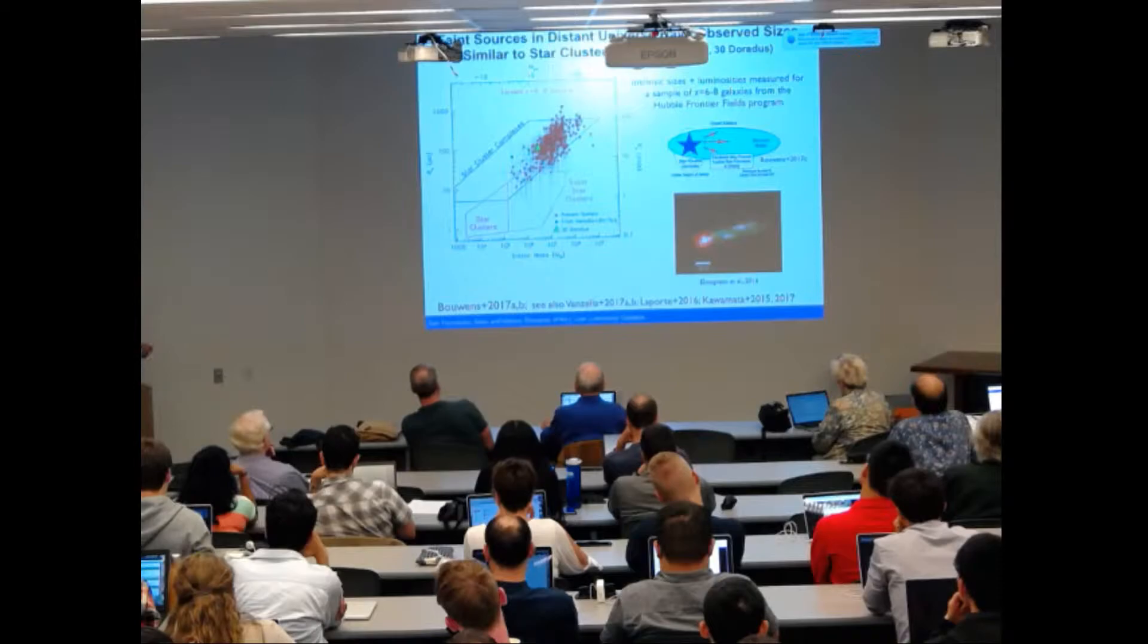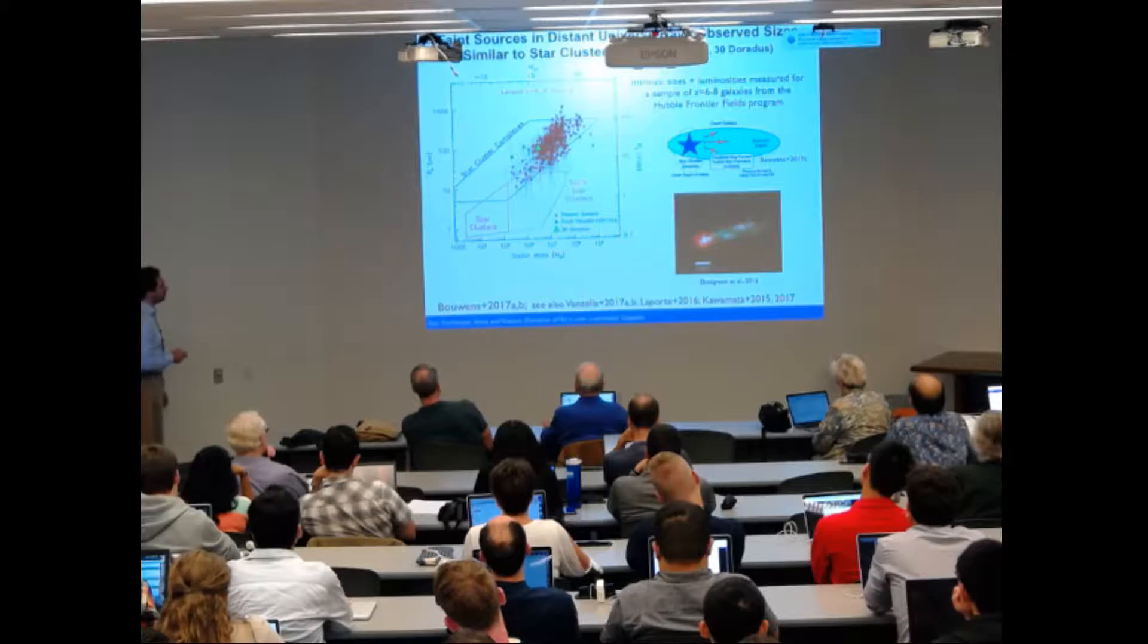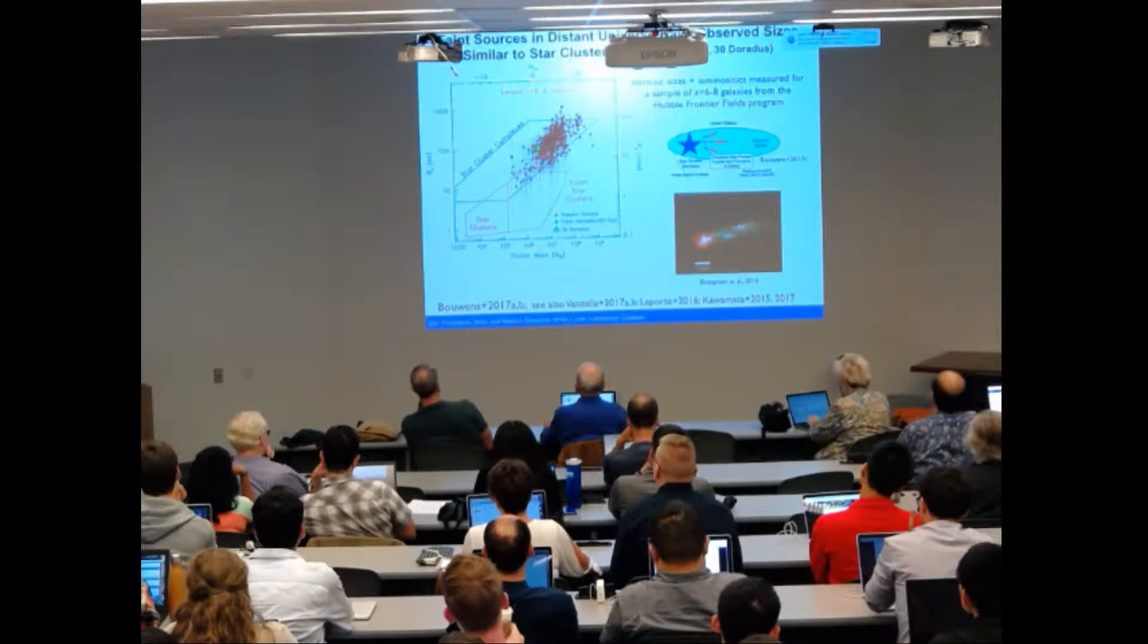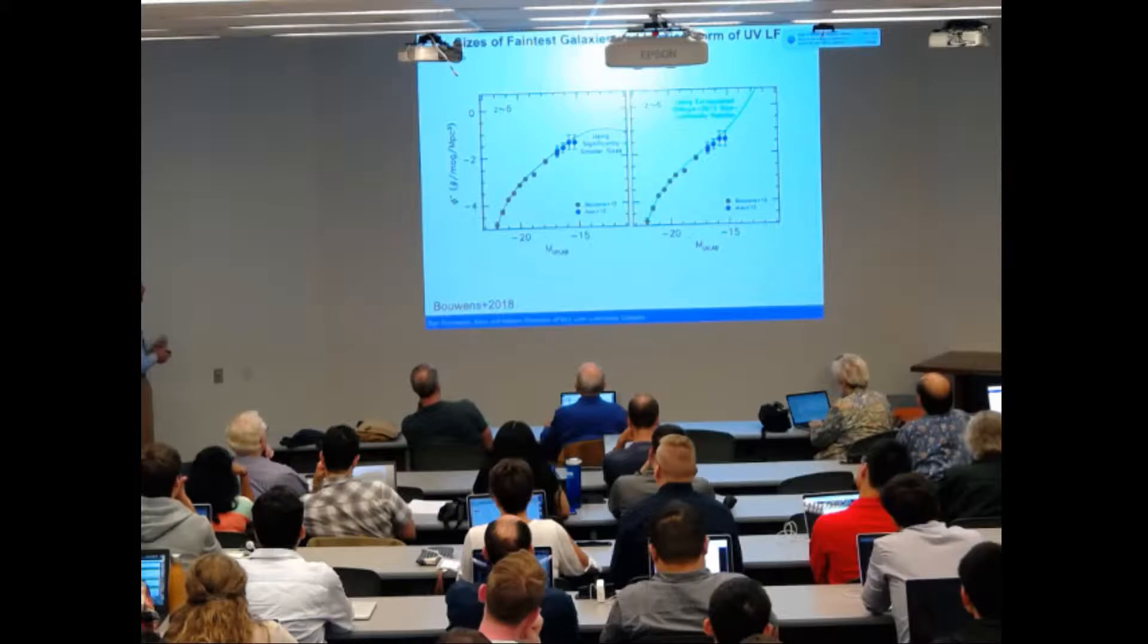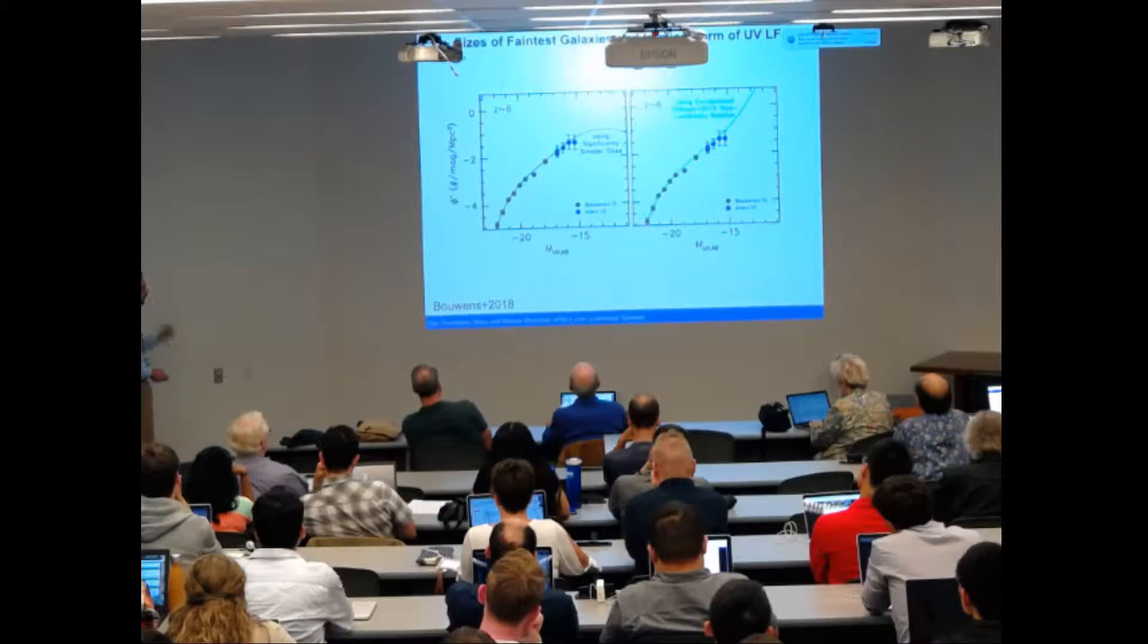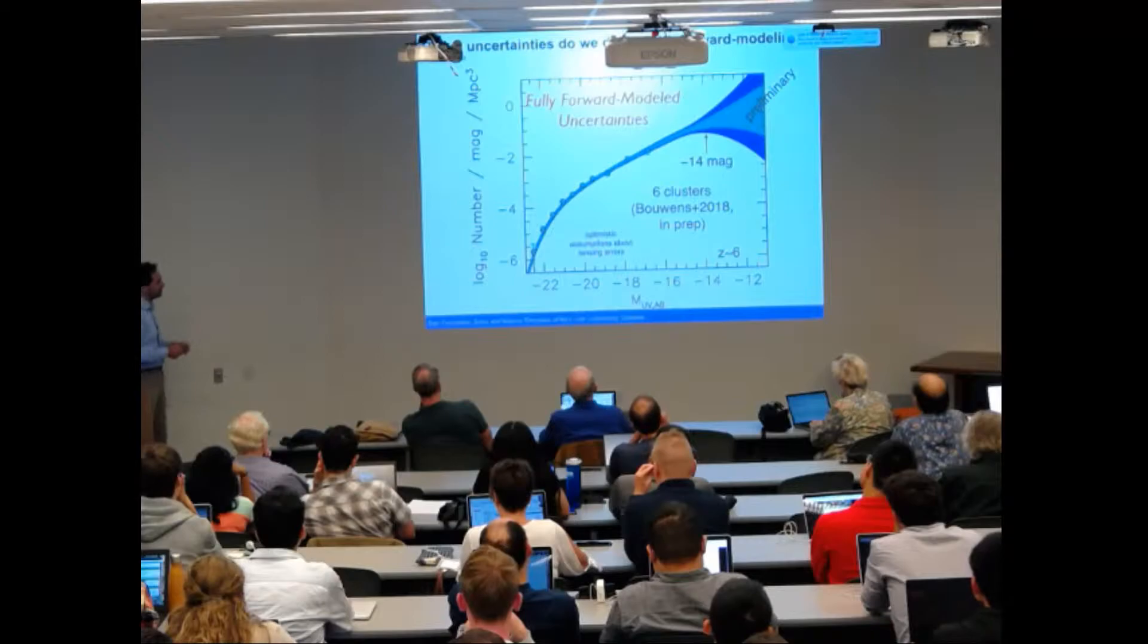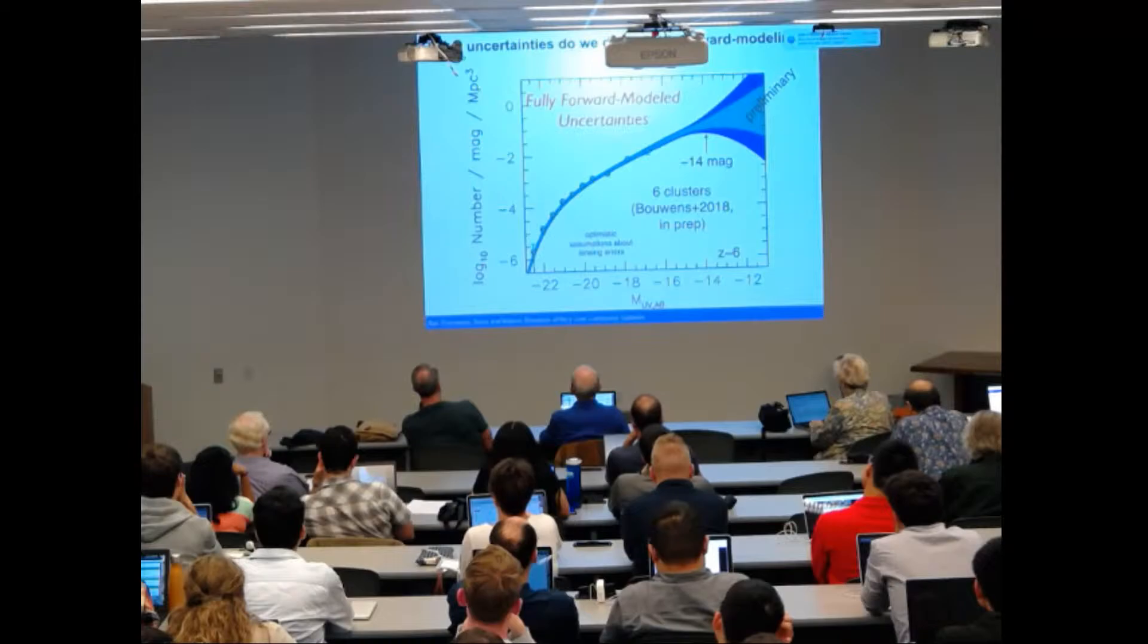The second important thing is that a number of works have now shown that the faintest galaxies at high redshift are characterized by very small sizes, extremely small sizes which are consistent with the sizes of super star clusters. This has important implications at the time of measuring the completeness of our sample, because different size assumptions mean different completeness factors and different faint end slope of the luminosity function. So this is work done by Richard Bouwens.